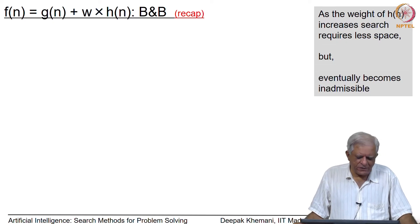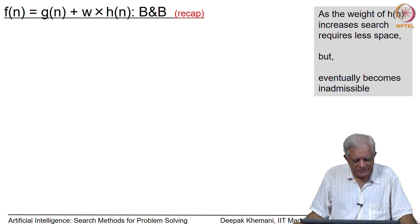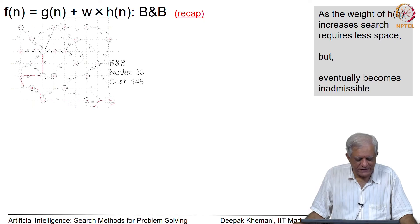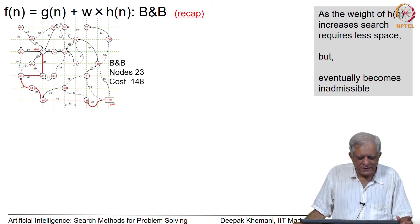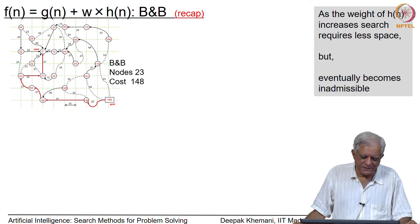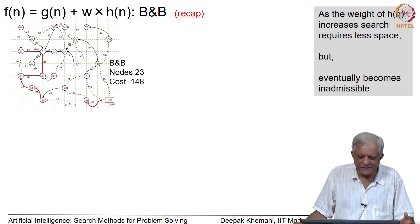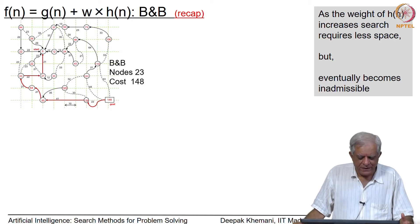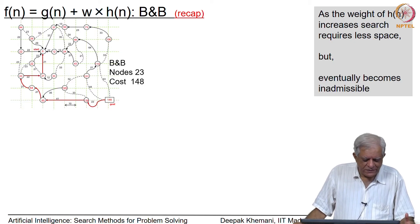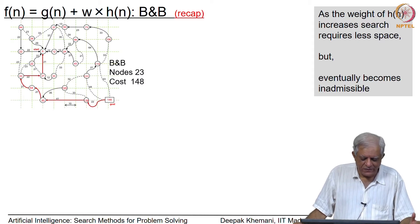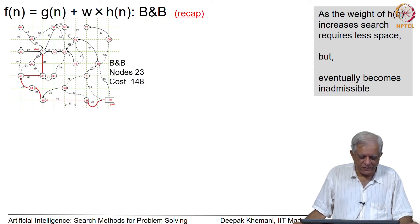This is what we were planning to see. The case where w = 0 is branch and bound. The algorithm explores the entire graph of 23 nodes in this case and finds the solution, which you can see in thicker lines in the bottom left, with a cost of 148.